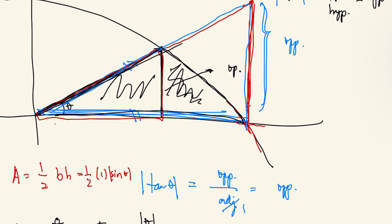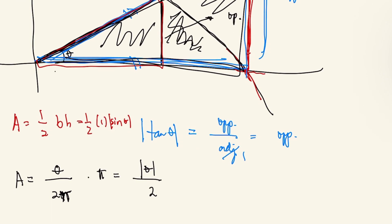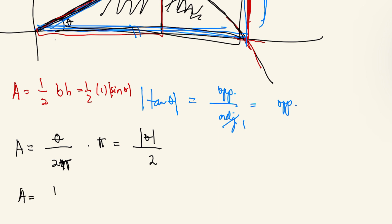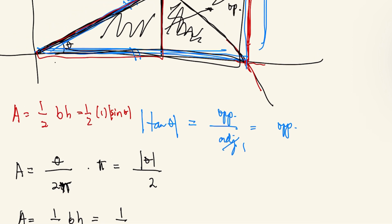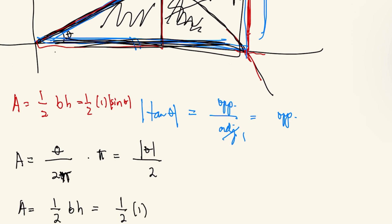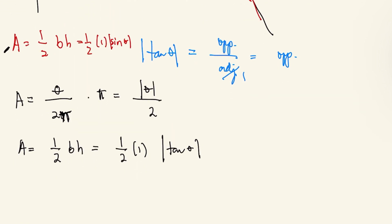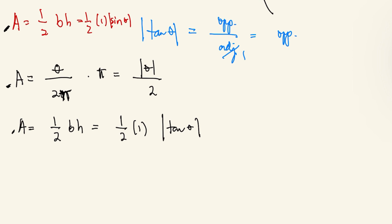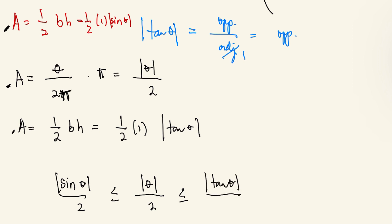For the larger triangle, the area is again one-half base times height. The base is 1 and the height is |tan θ|, so the area is (1/2)|tan θ|. Since the small triangle is contained in the sector which is contained in the large triangle, we get the inequality: |sin θ|/2 ≤ |θ|/2 ≤ |tan θ|/2.